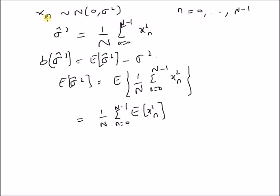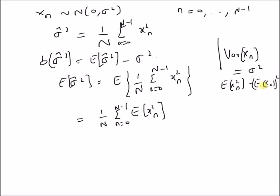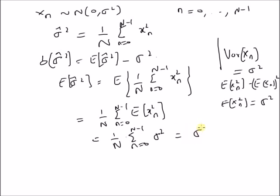Since the expectation of x(n) is zero, the variance of x(n) equals sigma squared, and it is also given by E[x²] minus (E[x(n)])². Since E[x(n)] = 0, we have E[x²(n)] = sigma squared. Therefore, this equals (1/n) * sum_{n=0}^{N-1} sigma squared = (n/n) * sigma squared = sigma squared. Therefore, the bias of sigma-hat squared is equal to zero.